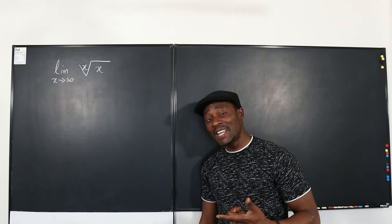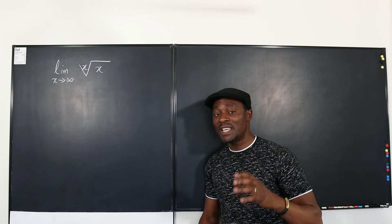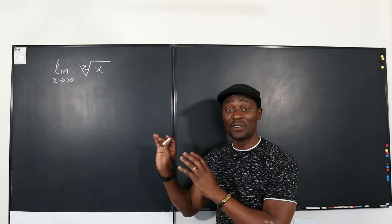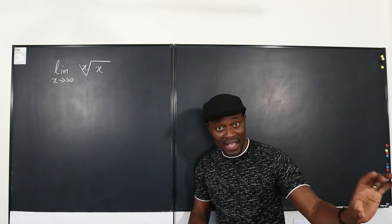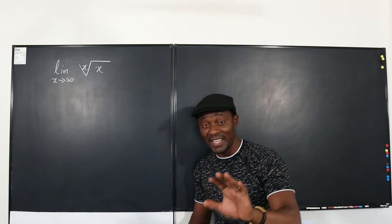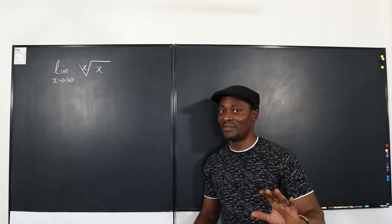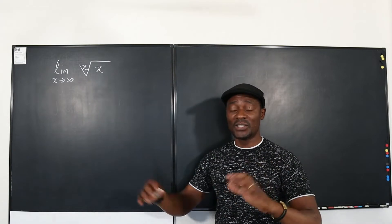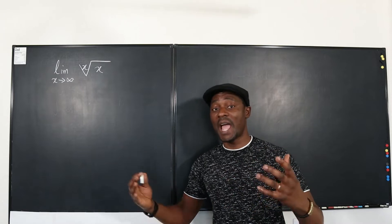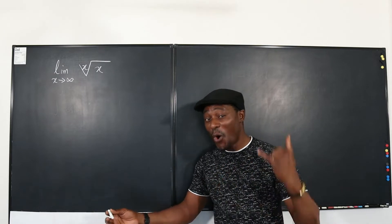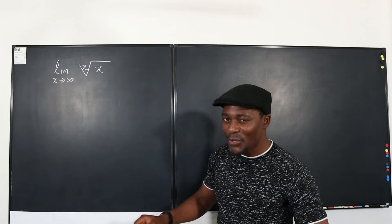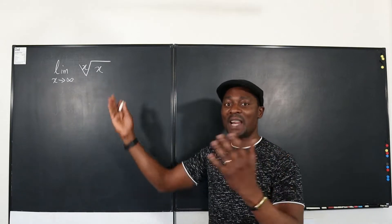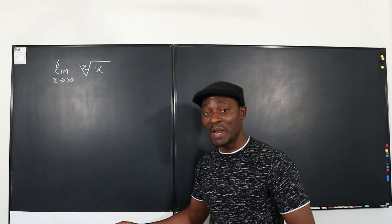Like I've said in other videos, whenever you see X approaching infinity, you must start thinking of how to make fractions out of whatever you have. Every time X goes to infinity, a fraction will always save you. Whenever it's not obvious what's going to happen as you go toward infinity, it's always good to make fractions. So the first thing you want to do is rewrite this expression not as a radical, but as an exponential function.